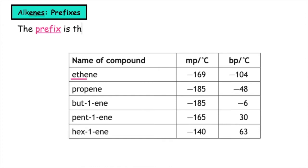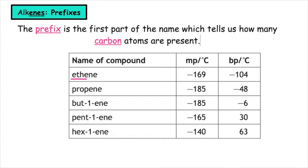The prefix is the first part of the name which tells us how many carbon atoms are present. We know that an alkene has to have a carbon to carbon double bond, which means the minimum number of carbons that an alkene can have is two.